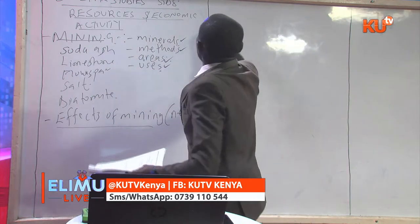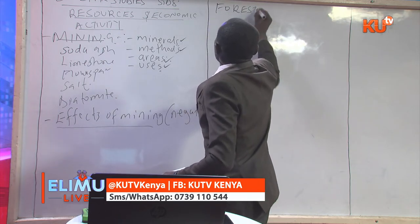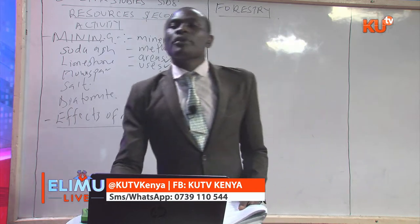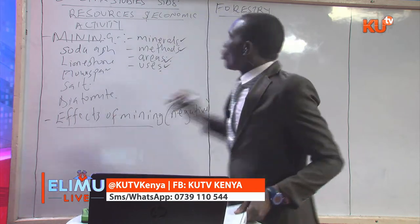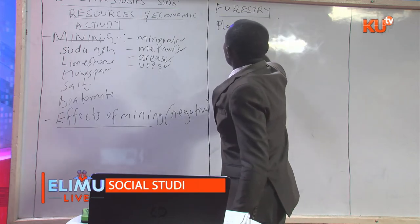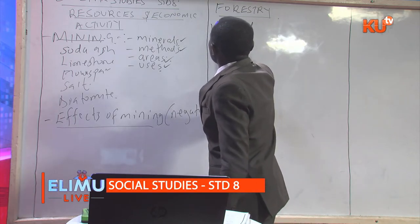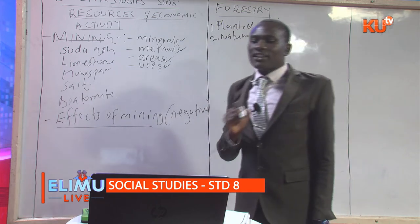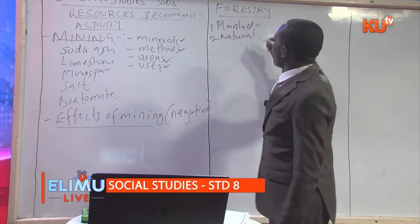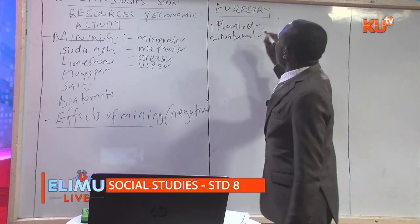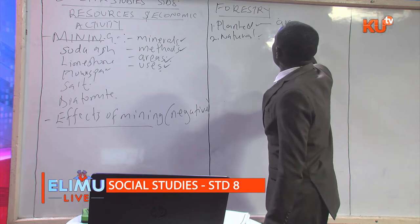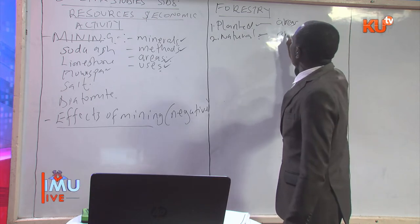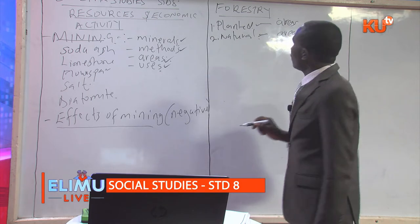Number two is forestry. Forestry is also an area that is most commonly examined. In this topic, a learner should be able to know: one, planted forest, and two, natural forest. These are the two areas that you as a candidate should be able to know. In planted forest, you should also know the areas where planted forests are found, and on natural forest, you should also know the areas where they are found.